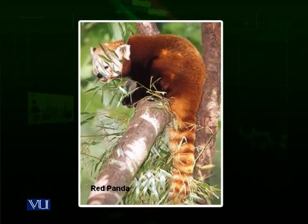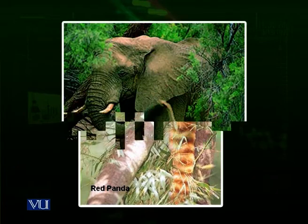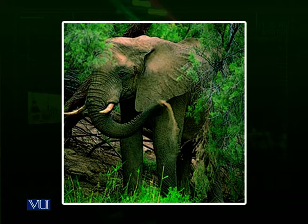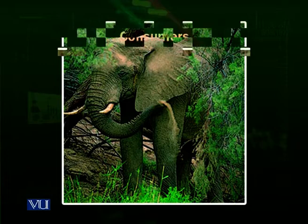You can see a red panda in this picture which is eating some leaves of a tree — so it's a herbivore. An elephant, a very huge and large animal, also feeds upon plants. It's a vegetarian animal.